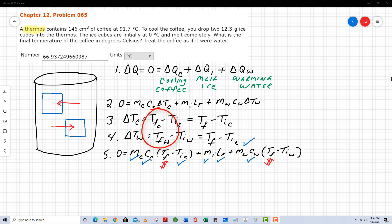Step number four shows what's happening with the change in temperature of the water, again resulting from the melted ice. The water's final temperature is going to reach the equilibrium temperature, which is the same as the final temperature of the coffee. That's what I'm showing here. The water's initial temperature, however, starts off at zero degrees Celsius because...